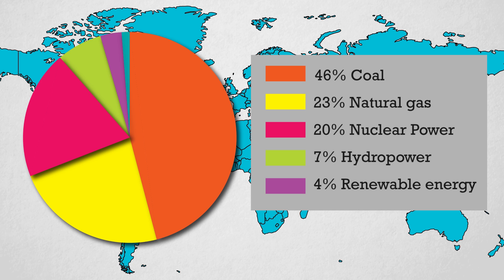Look at this chart. This shows the percentage of energy resources we use. 6% of our energy consumption comes from coal. 23% is from natural gases, which include petrol, diesel, and petroleum gas. 20% is from nuclear energy. 7% is from hydropower — the power we derive from falling or fast-running water. Renewable energy accounts for only 4%.